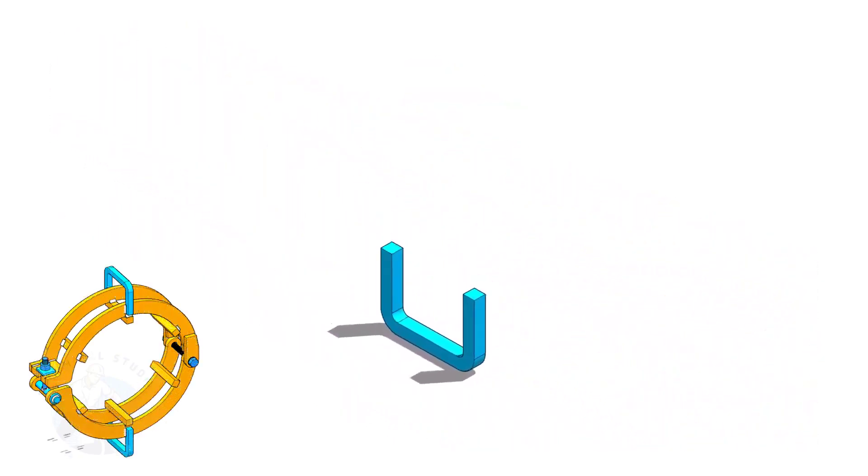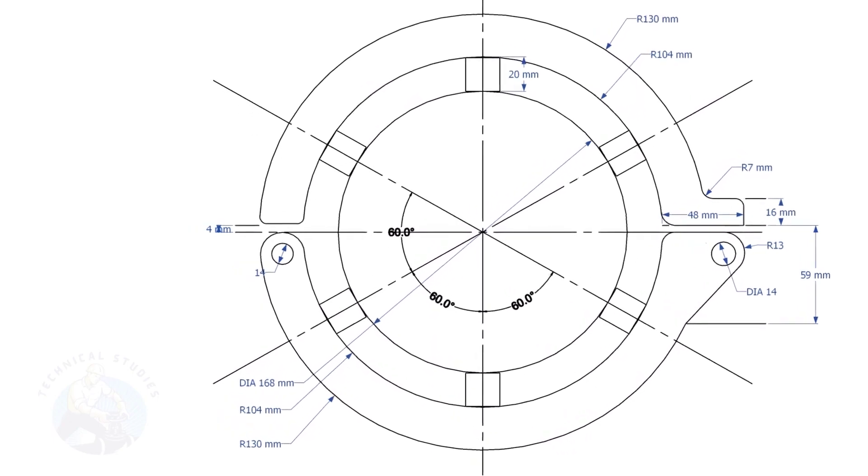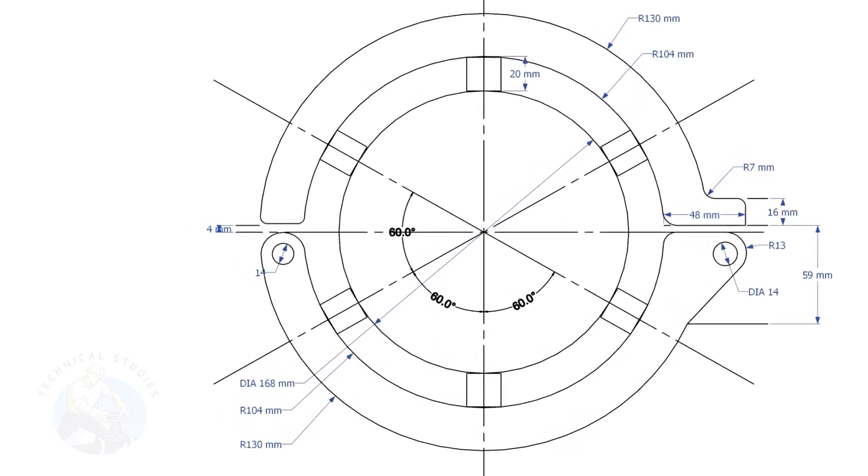Let us make the different parts of the pipe clamp. This is the main part of the clamp. I will explain to you how to layout this. There are two parts for the main body, the upper half and the lower half. Each part of the body, there are two pieces.